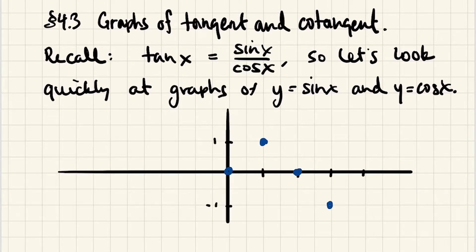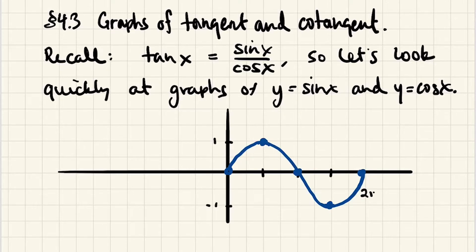We know sine takes on this particular pattern with a sinusoidal wave, and we know that the default period for y equals sine of x is 2π, which means this unit out here is 2π, this is π, this is π over 2, and this is 3π over 2. This is 1 period of sine, but let's also draw a few more periods of it.